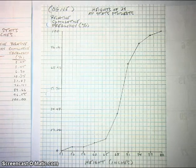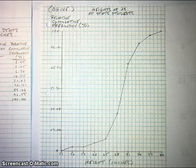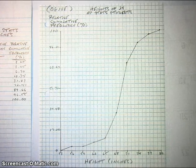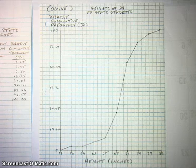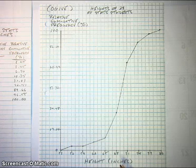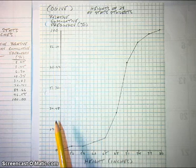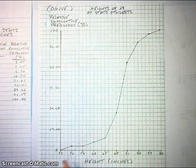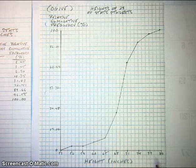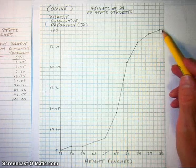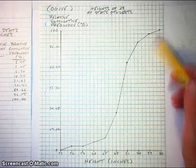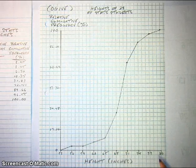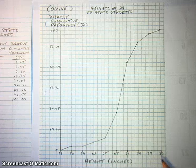And there is your ogive — your relative cumulative frequency graph. It's a very useful graph for calculating percentiles that correspond to particular data values, and for estimating data values that correspond to given percentiles. Think of the vertical axis as a percentile axis and the horizontal axis as the data values axis. This graph shows how those percentiles and raw data values are related, and we'll look at that in more detail in another video.